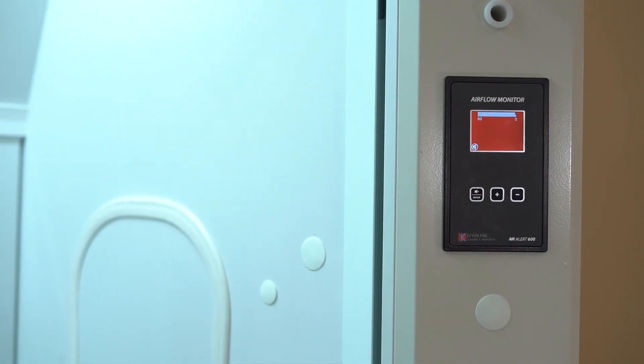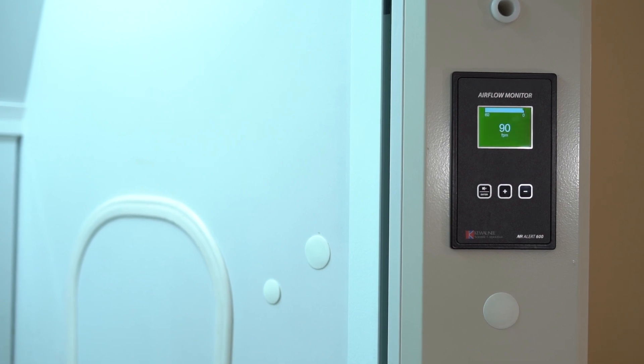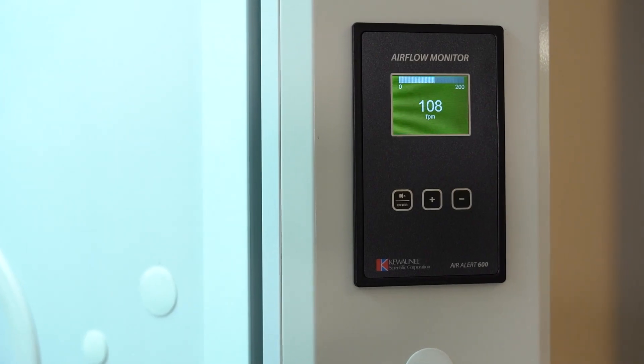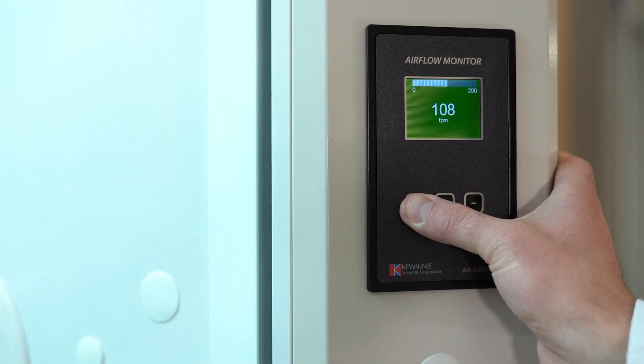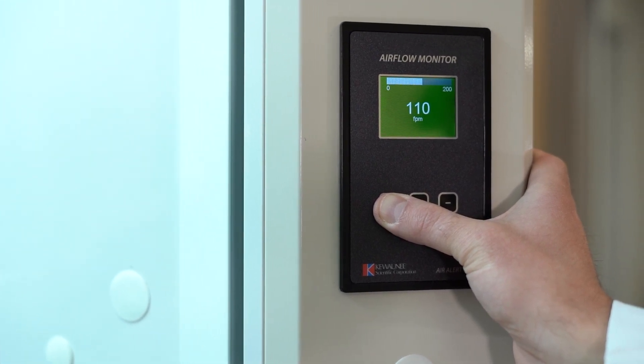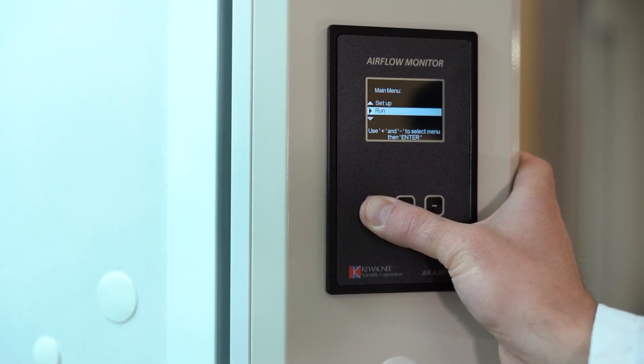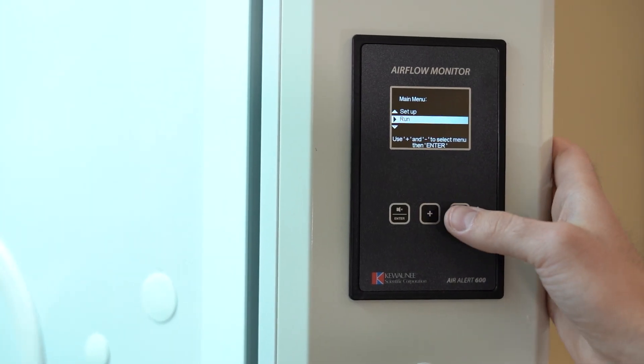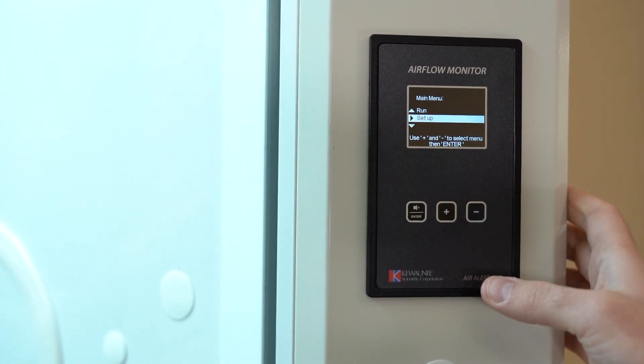If you're authorized to adjust the settings of your fume hood, this is how to enter the menu to adjust settings or complete a calibration. Hold the enter button for 8 seconds. Use the plus or minus buttons to navigate and the enter button to confirm.